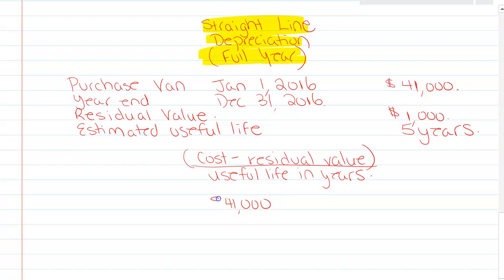$41,000 minus $1,000 over five. So $41,000 minus $1,000 is $40,000 divided by five. That gives me $8,000 of depreciation per year.